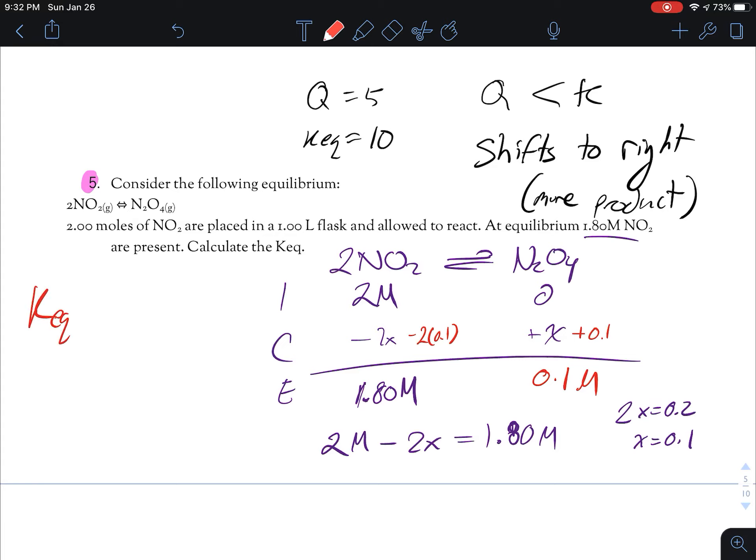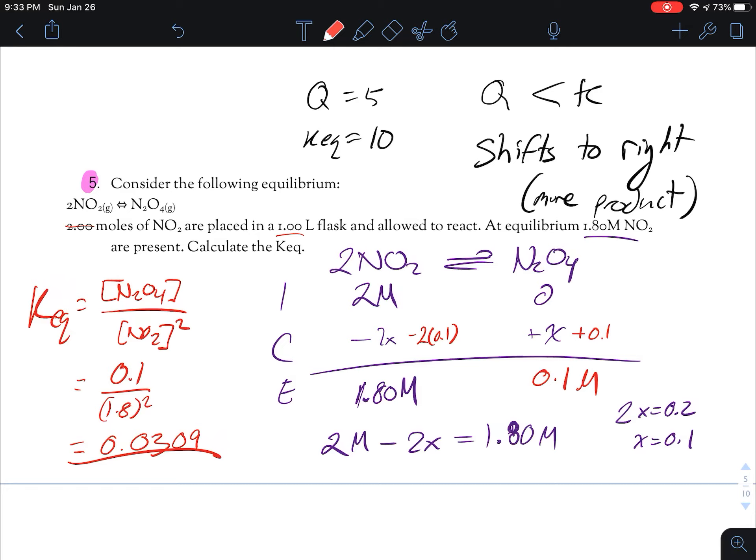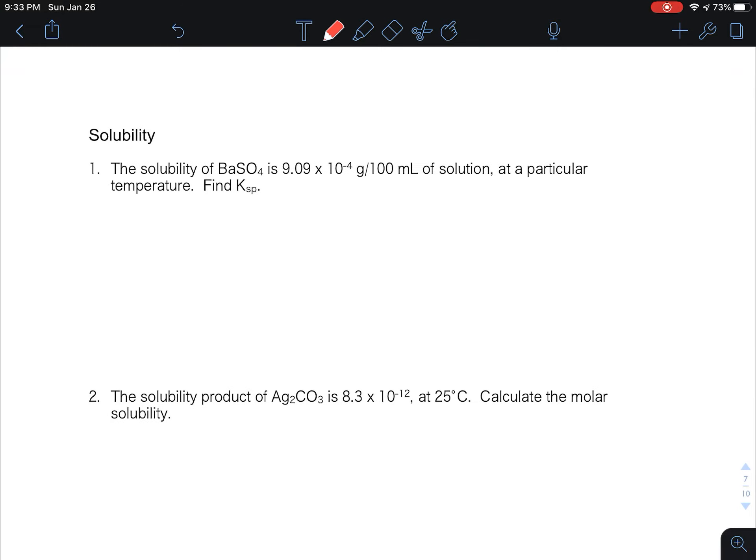So your K is going to be equal to N2O4 divided by NO2 to the power of two. So that means I'm going to do 0.1 divided by 1.8 squared. And I get a K of 0.03. I have three significant figures here, so I'm going to go 0.0309. So I'm not going to be a stickler about significant figures, but you should try at least to be approximately in the right area. Don't just give me one significant figure if I gave you all these numbers with lots of decimal places. All right, let's take a break and come back for solubility in a minute.